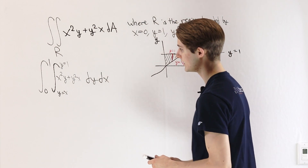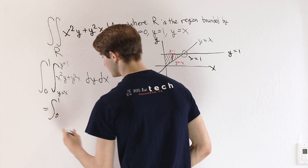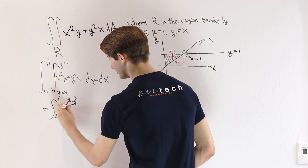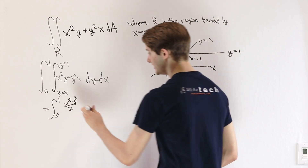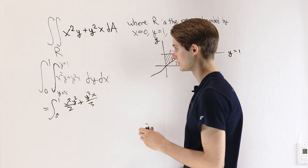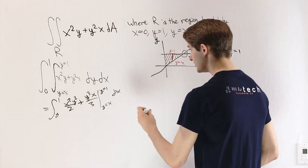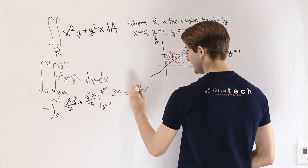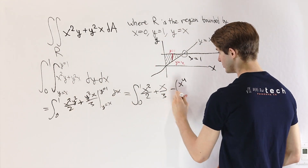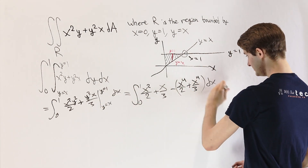So let's work out this example and see what we get. On the inside, when we integrate with respect to y, we keep the integral from zero to one on the outside for x. The integral of x squared y is x squared y squared over two, and the integral of y squared x is y cubed x over three — this is just the power rule because we're treating x as a constant. Now we evaluate that at y equals one and y equals x. At y equals one we get x squared over two plus x over three. Then we subtract, plugging in y equals x: x squared y squared becomes x to the fourth over two, and y cubed x becomes x to the fourth over three.